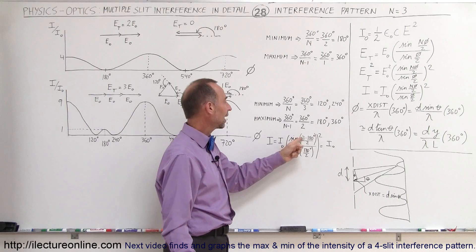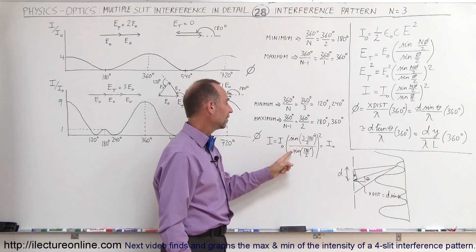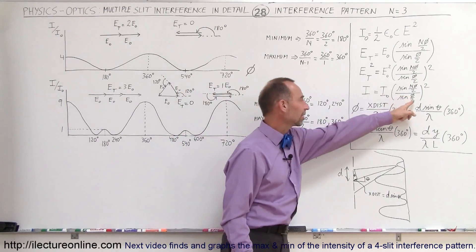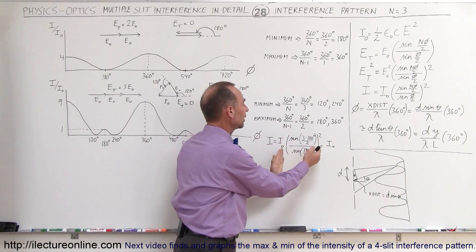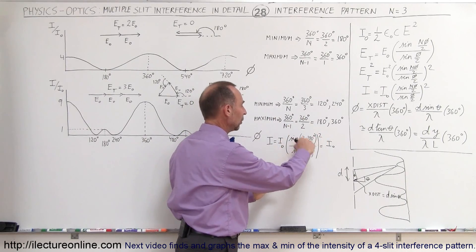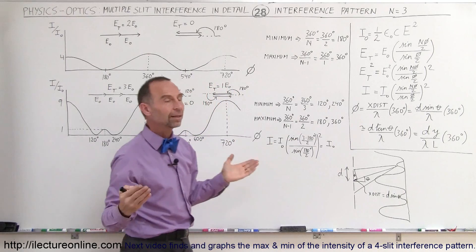180 degrees divided by two times three. Take the sine of that and divide that by the sine of the phase angle divided by two. Take that whole quantity squared. This will end up being one. One times I sub not will simply be I sub not.